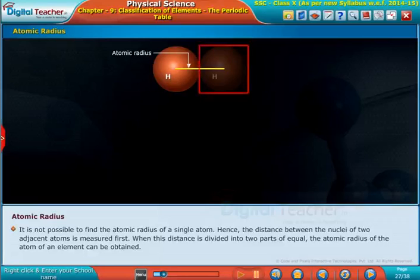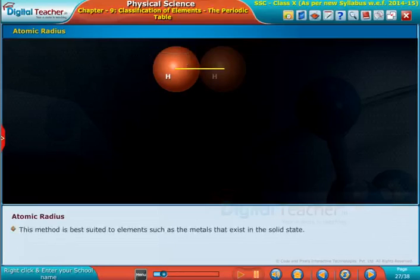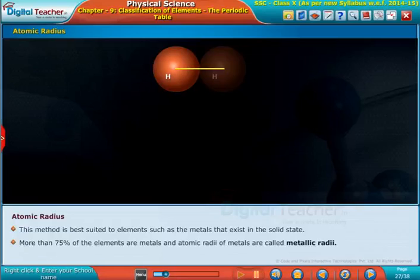This method is best suited to elements such as metals that exist in the solid state. More than 75 percent of the elements are metals, and atomic radii of metals are called metallic radii.